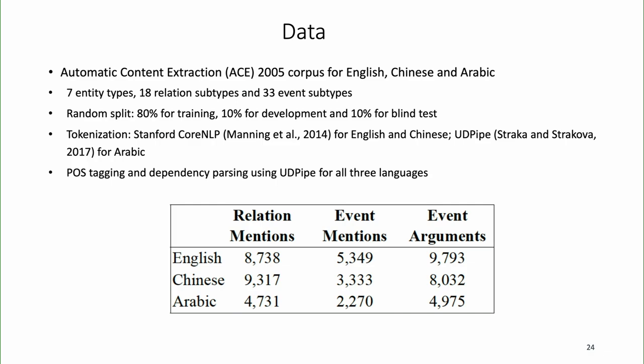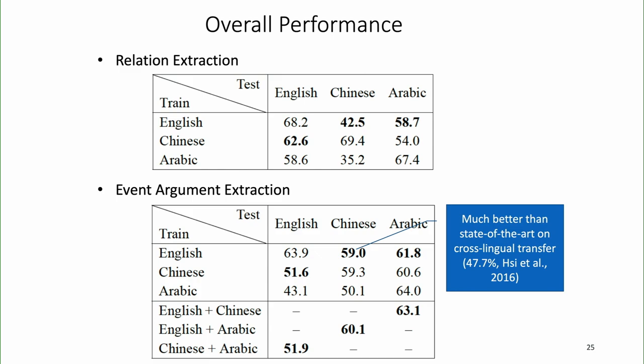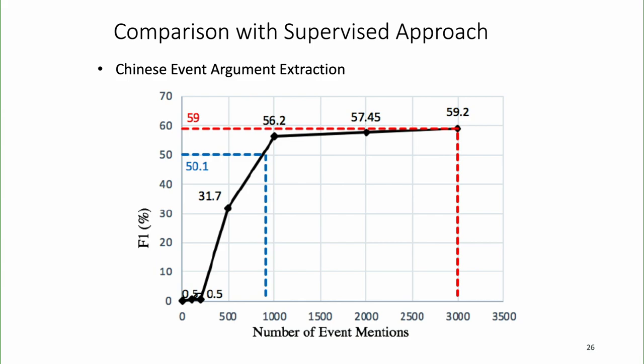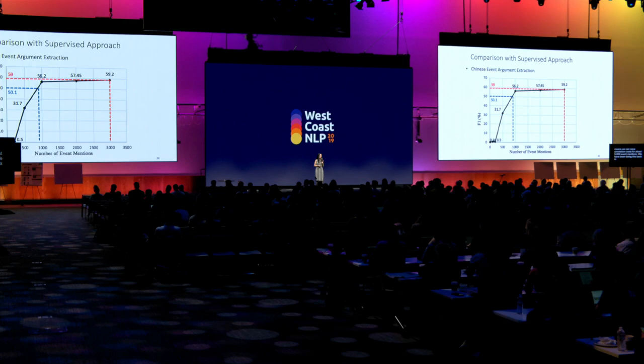Results are quite promising. Training from English and applying to Chinese gives a 59 F-score, very similar to 59.3 when training and testing on Chinese. Looking at the learning curve, the black line shows the supervised model — as you annotate more mentions, performance goes up — and it's very similar to the red dashed line trained from English. This means we can save annotation costs for about 3,000 event mentions. We spent two years with 10 experts back in 2003-2004 annotating Chinese event arguments — so that means those two years were a complete waste of time.